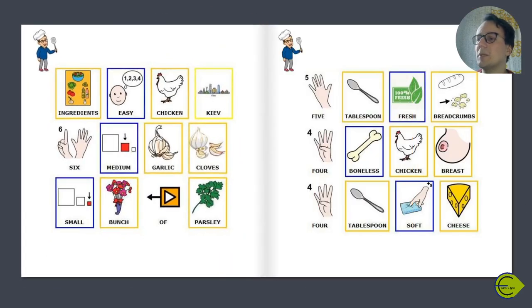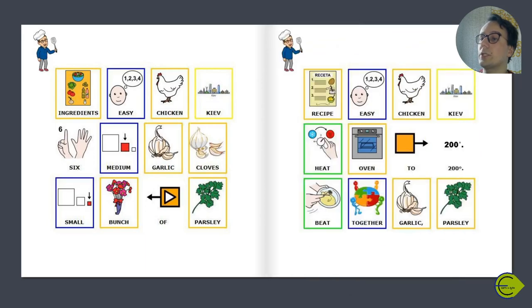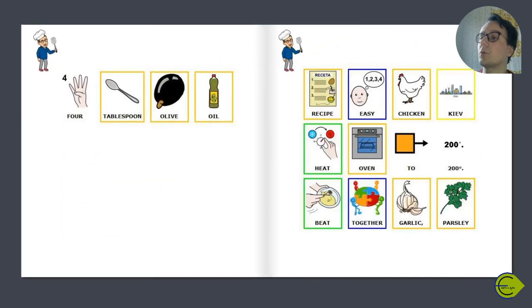Ingredients: 6 medium garlic cloves, a small bunch of parsley, 5 tablespoons fresh breadcrumbs, 4 boneless chicken breasts, 4 tablespoons soft cheese, 4 tablespoons olive oil.